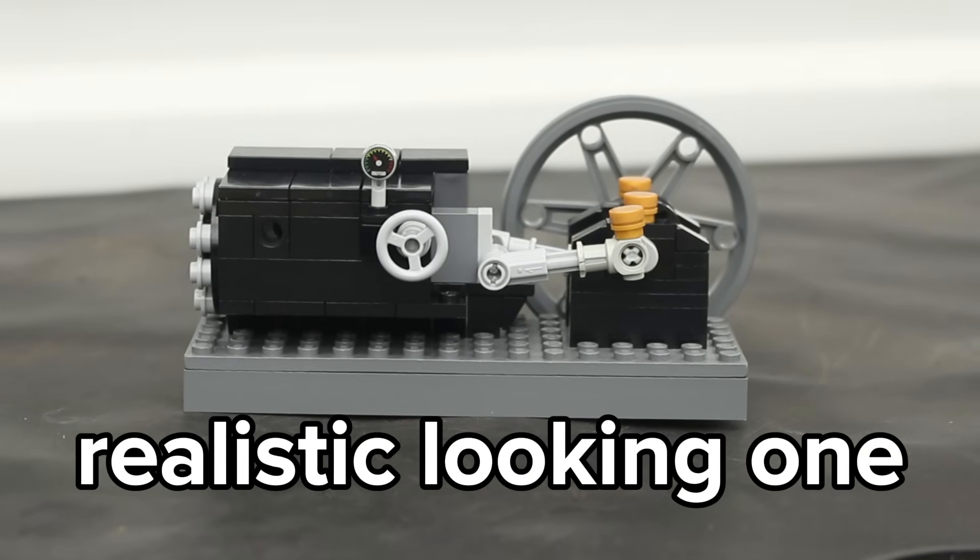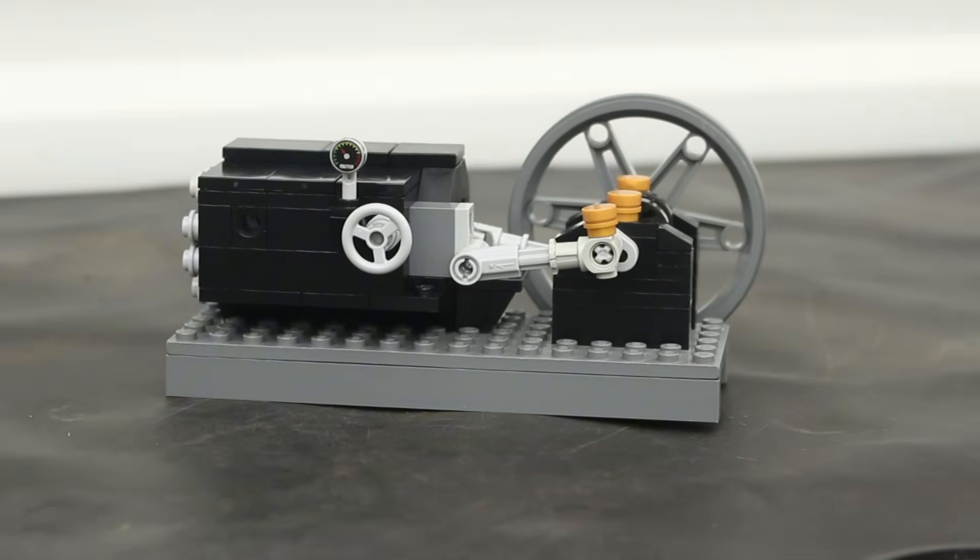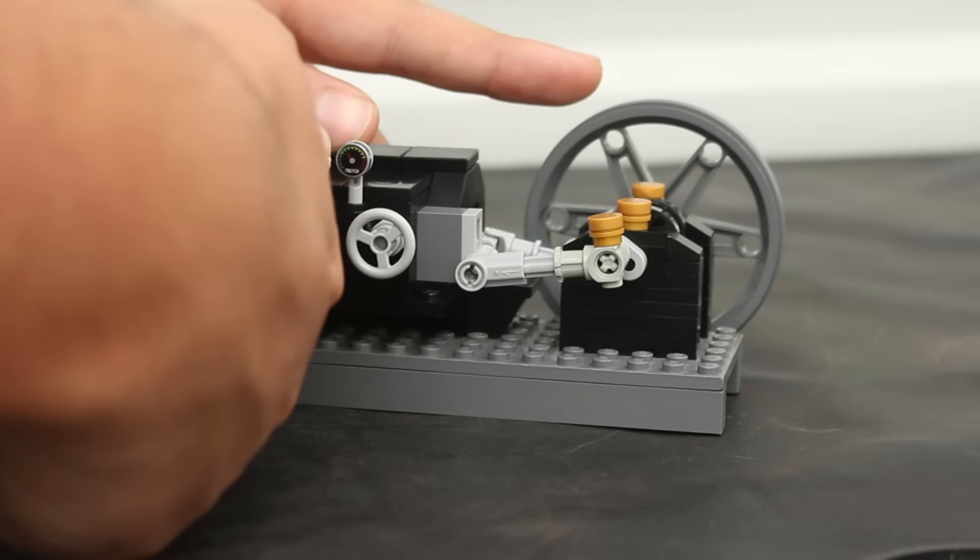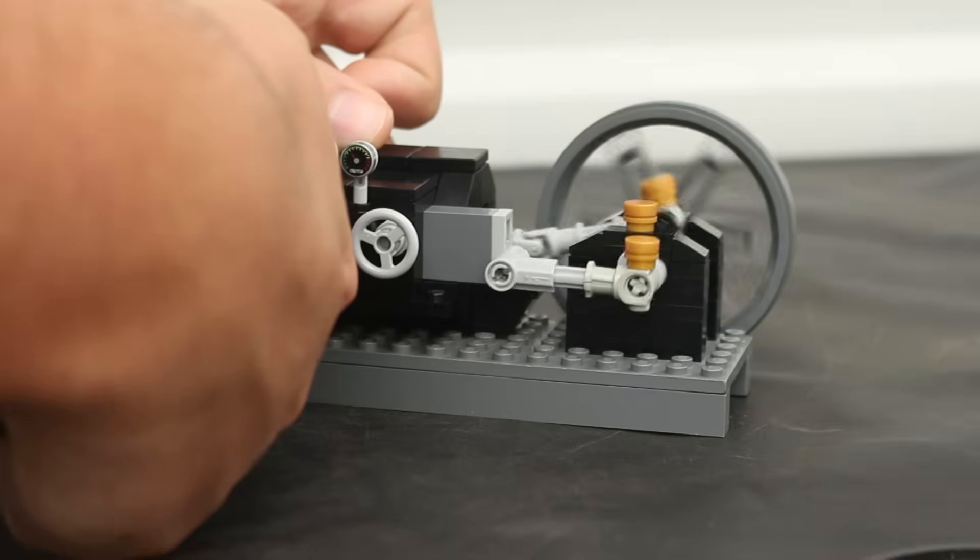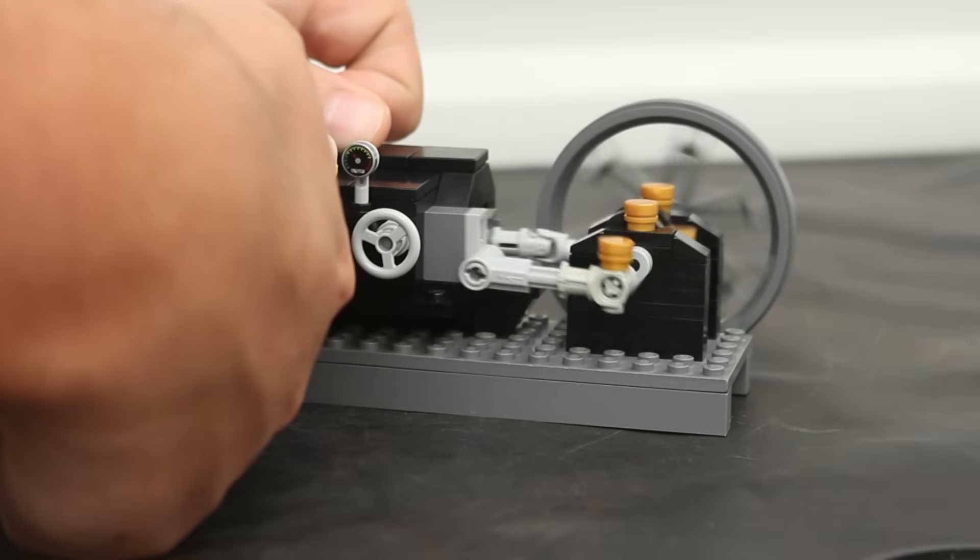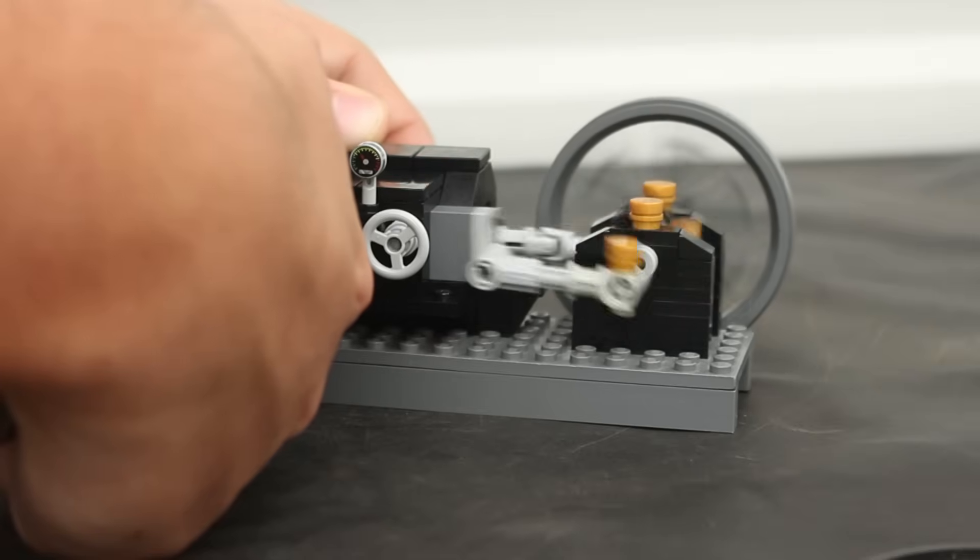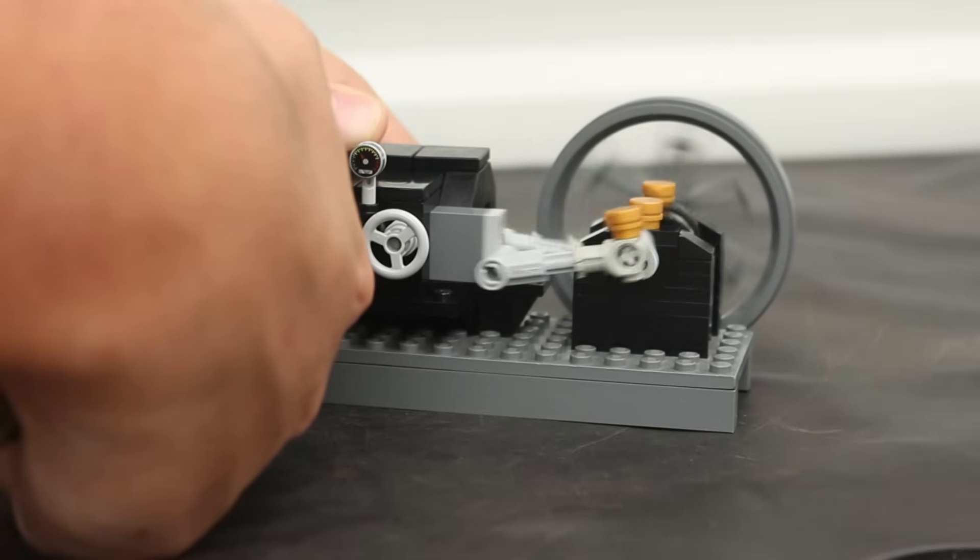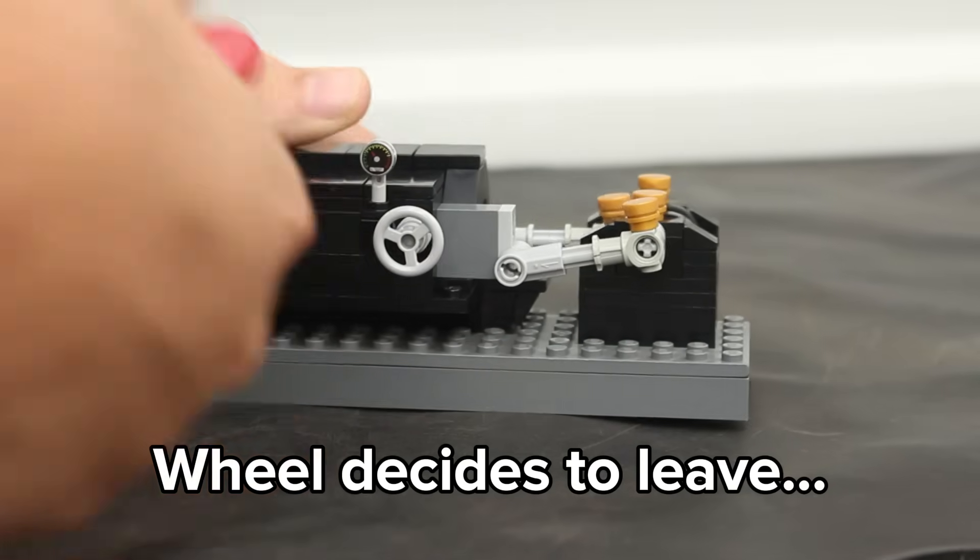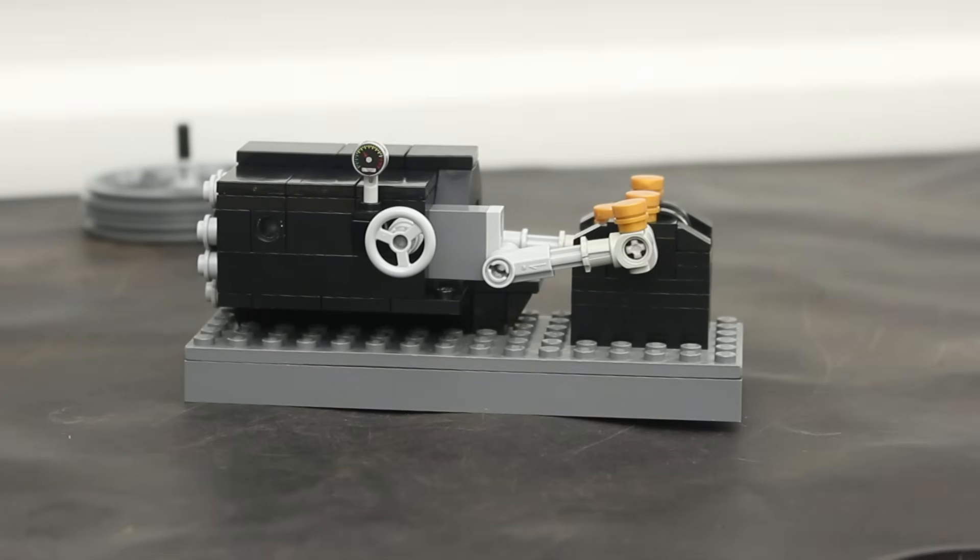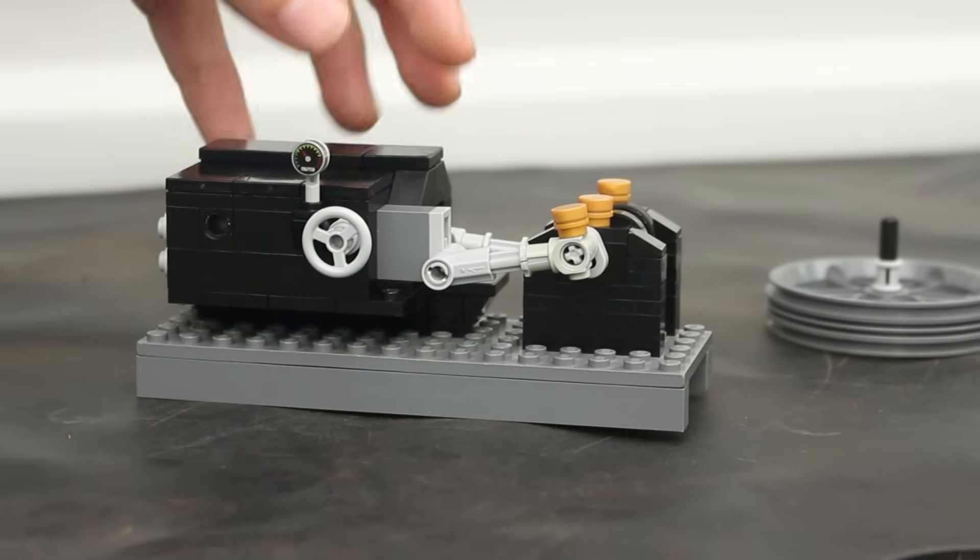Alright, here's the realistic looking one. It works exactly the same, it's got the same valve and the same piston, same everything basically, it just looks different. Alright, let's see how this thing runs. Look at that drum. Oh, the flywheel came rolling off. So it doesn't run near as fast as the other one but I think this one looks a lot cooler.